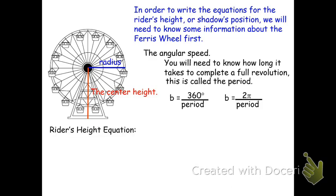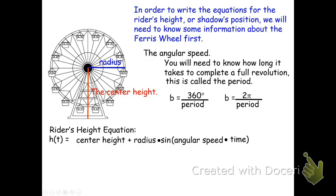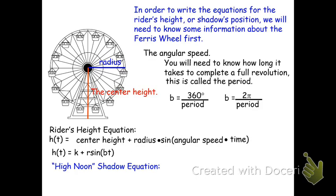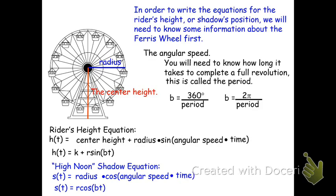For the rider's height equation, h(t), we take the center height plus the radius times sine of the angular speed times time — the angular speed times time develops the angle of revolution. We write this as h(t) = k + r·sin(bt), where k is the center height (vertical shift), r is the radius, and b is the angular speed. For the high noon shadow, the shadow is always on the ground so there is no k value. The shadow's equation s(t) = r·cos(bt), using cosine to measure the horizontal component. Sine is for the rider's height; cosine is for the high noon shadow, provided the rider starts on the extreme right-hand side.